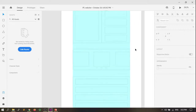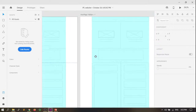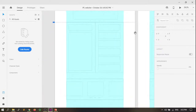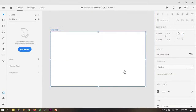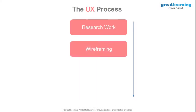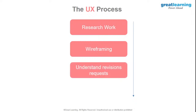Once you've done your research work, you move on to wireframing, where you wireframe the whole website. Once you've done wireframing, you give it to the stakeholders or your boss, who gives input — the business or marketing department might say they want things changed or added. That's where you understand the revision requests and what revisions need to be put. Then you go ahead and create prototypes. The difference between wireframing and prototypes is that prototypes are higher fidelity — you're basically creating like the actual website.